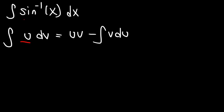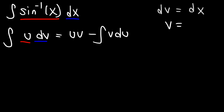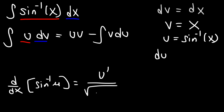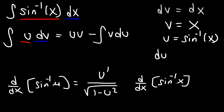We're going to make u equal to arc sine of x, and dv is going to be dx. If dv equals dx and we integrate both sides, then v equals x. Now u equals arc sine of x, so what is du? The derivative of arc sine of u is u prime over the square root of 1 minus u squared. Therefore, the derivative of arc sine of x is 1 over the square root of 1 minus x squared, and so that is du.